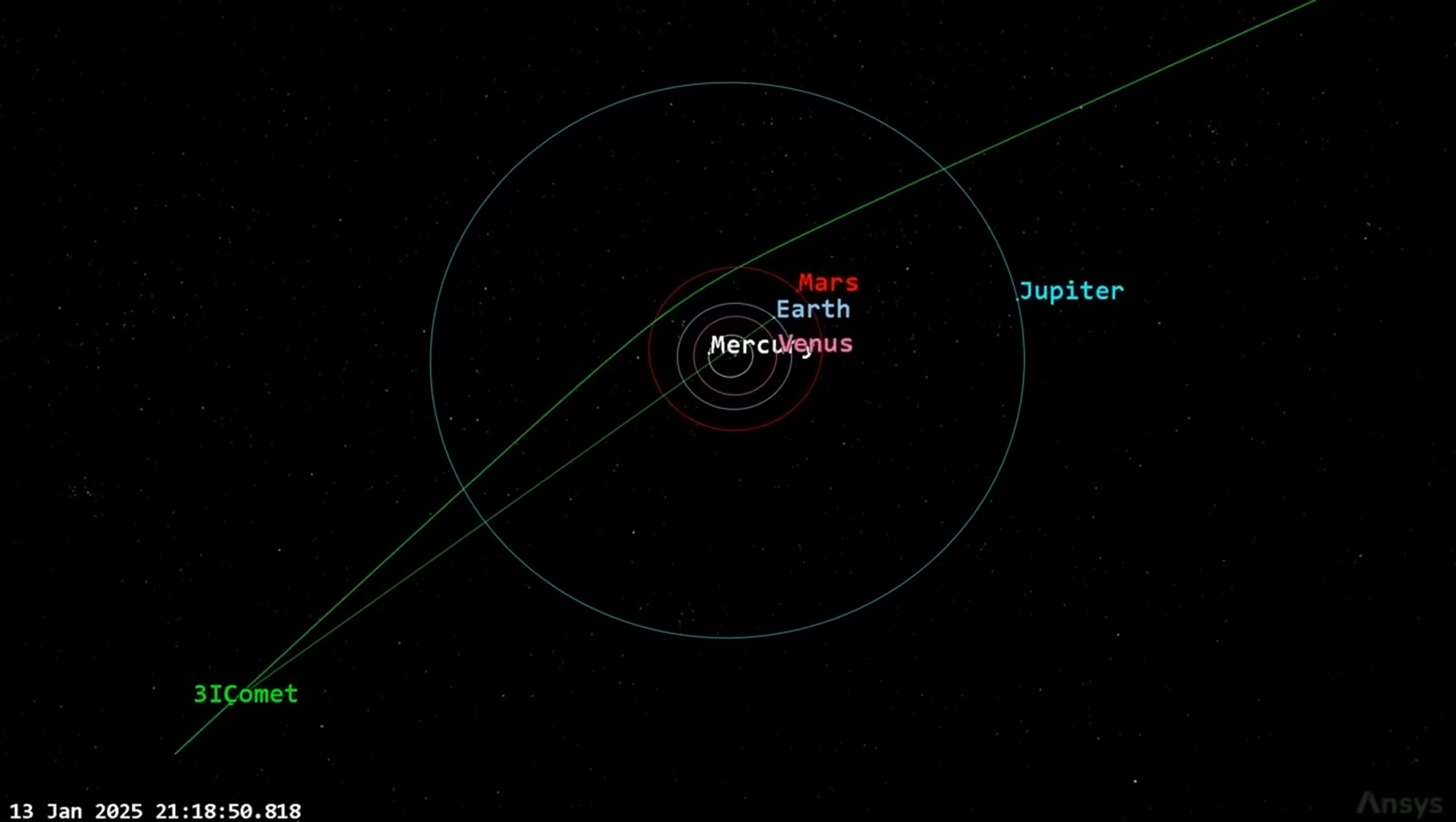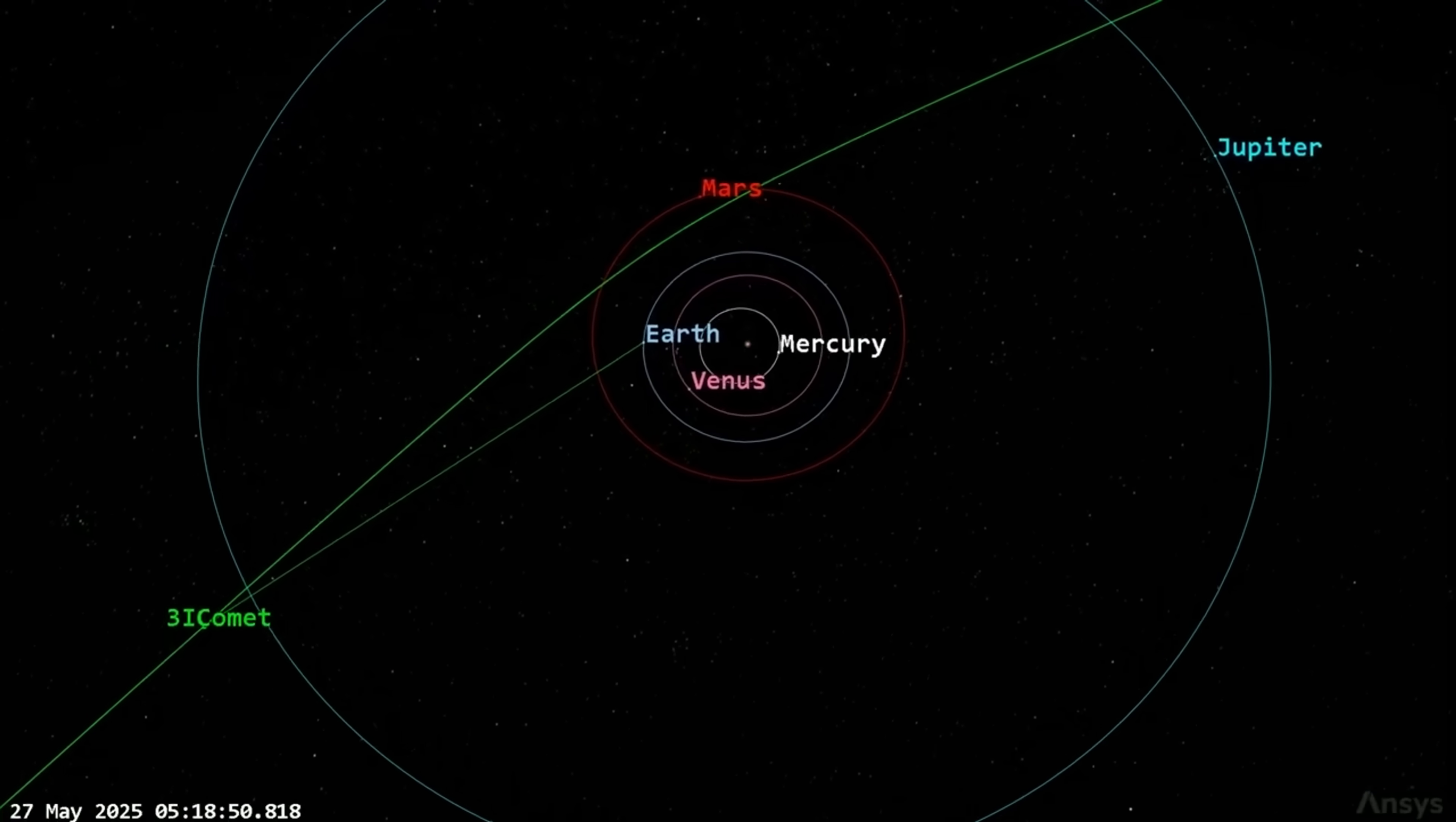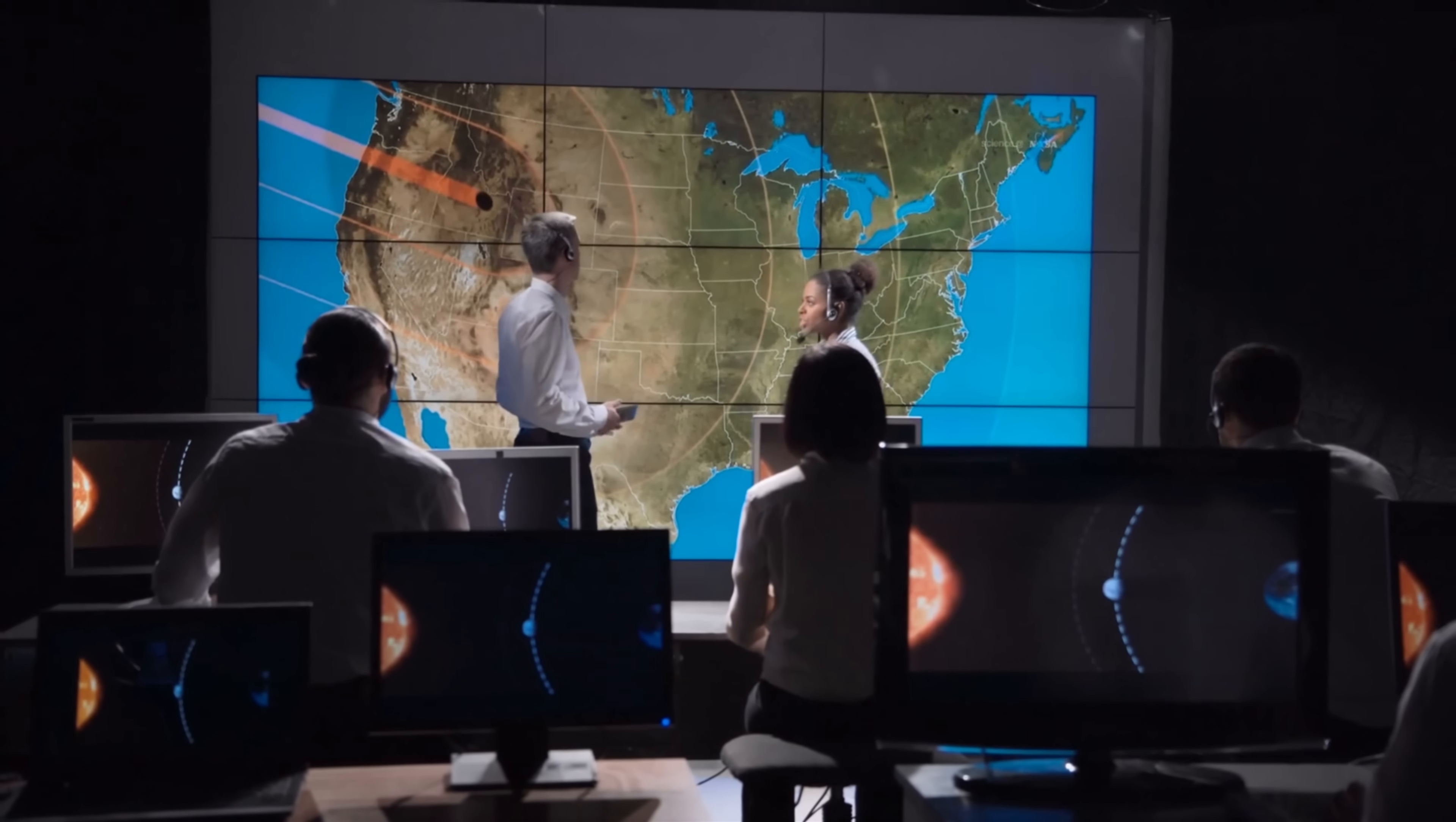3i Atlas, meanwhile, might be written off as an unusually massive comet, but that label fails to account for the baffling nickel signature in its coma, or its unnerving steadiness in flight. Every natural explanation so far leaves crucial details unresolved, as though the object itself resists being neatly categorized.